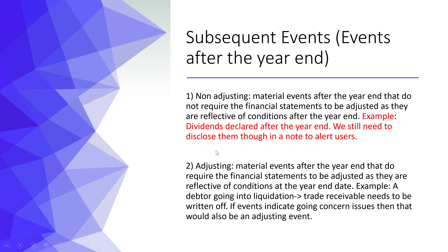An example of an adjusting event is if you have a trade receivable of £25k and the customer goes into liquidation after the year-end — you need to write off that £25k. So you do: debit expense, credit trade receivable. That would be an adjusting event.